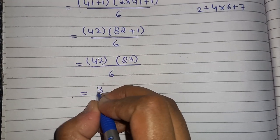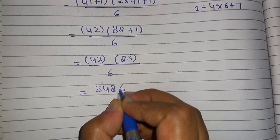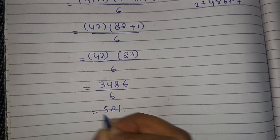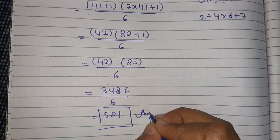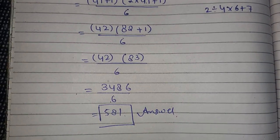And then, after simplification students, you will get 3486 that is divided by 6 and then you will get 581 after dividing these terms. And this is your required answer.